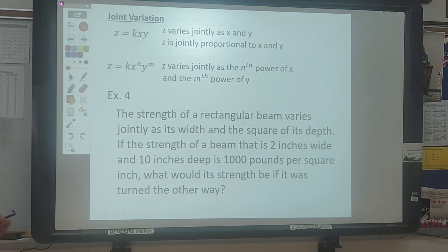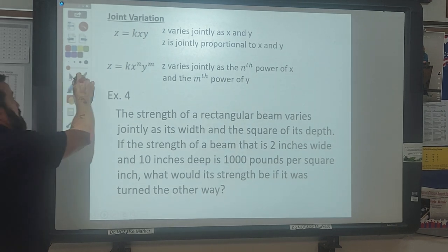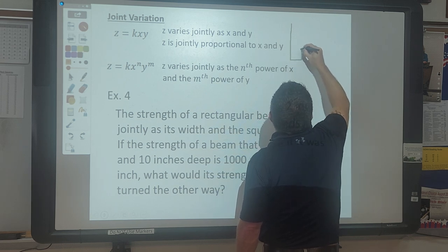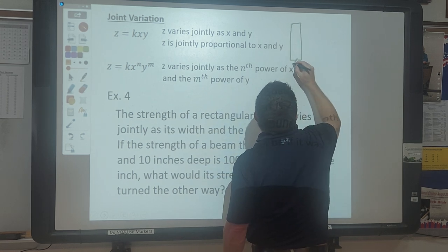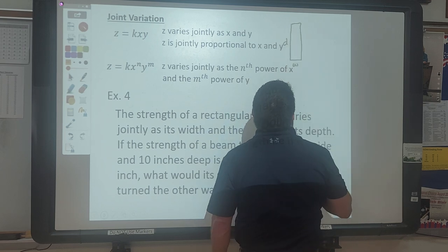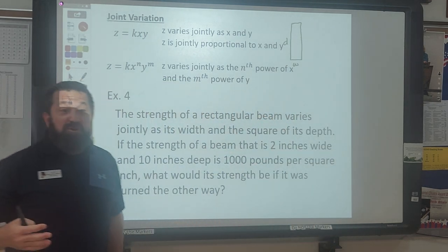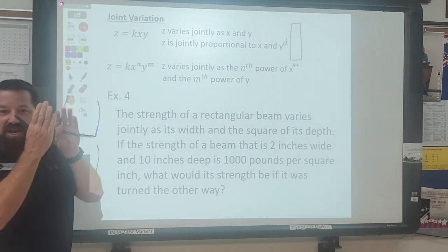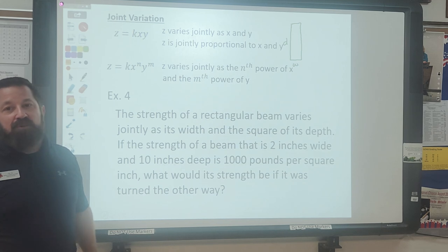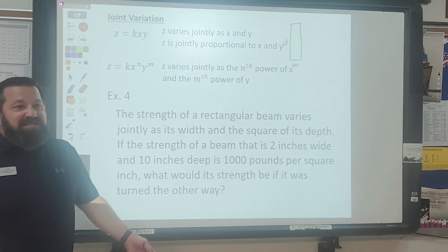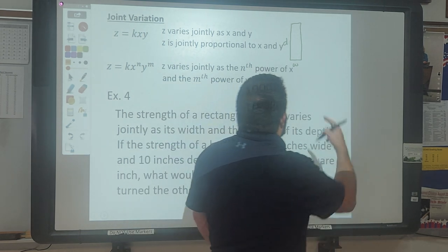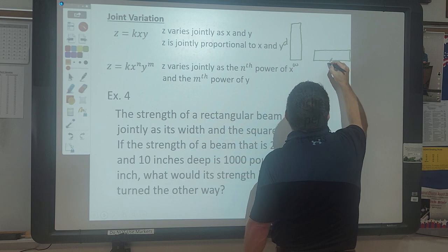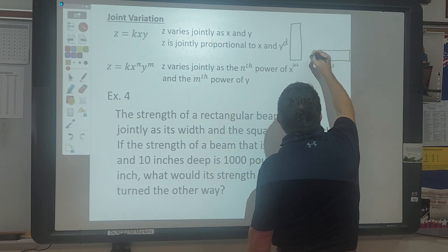So what I have for an example here is we're going to be looking at the strength of a rectangular beam. So when you have a beam that goes this way, this would be considered the width, and going this way would be considered the depth. Because you've got another dimension, you've got the length of the board as well. So you're looking at like an end view of like a 2x4, or something like that, or a 2x10. So if you have the board that way, or if you have it laying down like this, this would be your W, that would be your width, and this would be your depth.